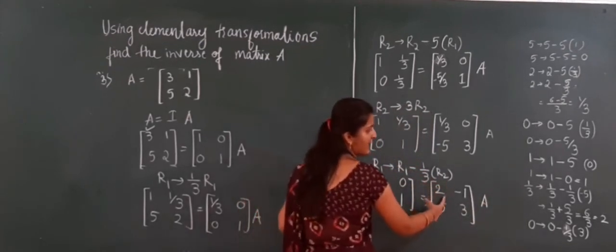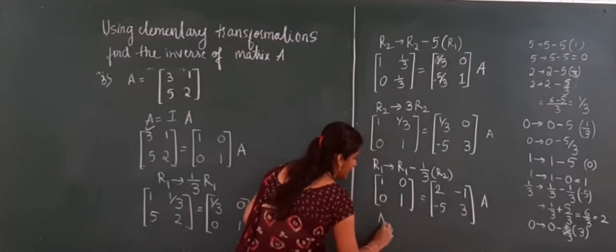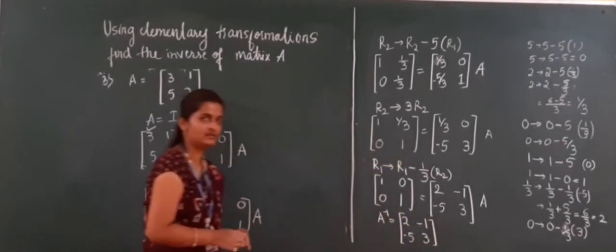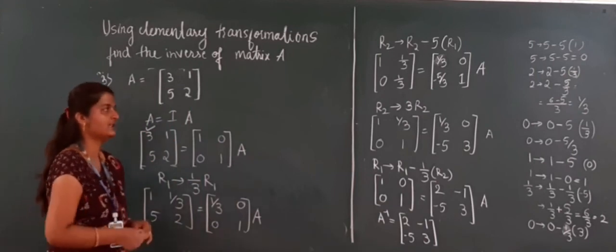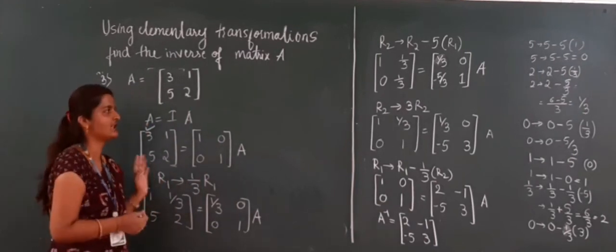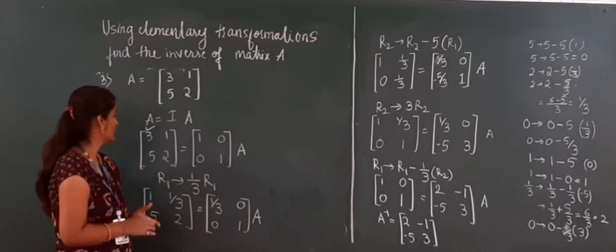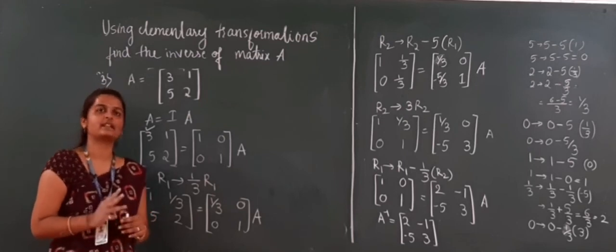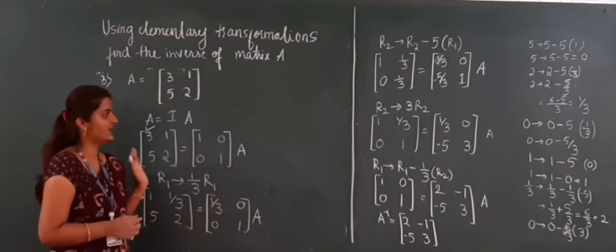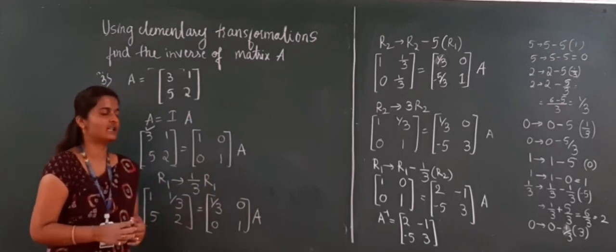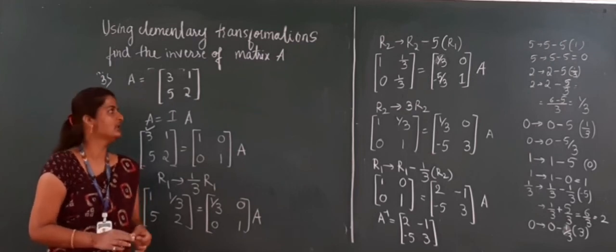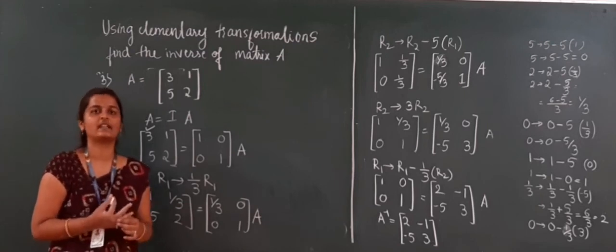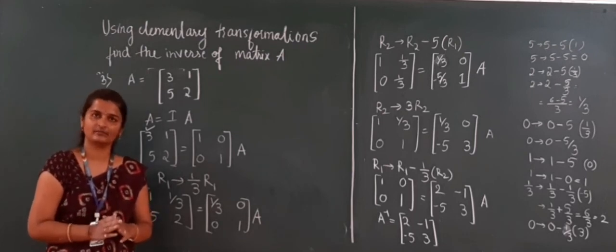Here we got the identity matrix on the left, and one matrix multiplied with another — so A inverse equals: 2, -1, -5, 3. Like this we can solve the inverse of a matrix using elementary transformation. Remember: for making numbers in the matrix equal to 1, apply the second transformation — multiplication. For making zeros, apply the third transformation. With this we have completed the inverse of a matrix and the matrices chapter. Please go through these topics as this is a very easy and important topic for your annual examination. Thank you.